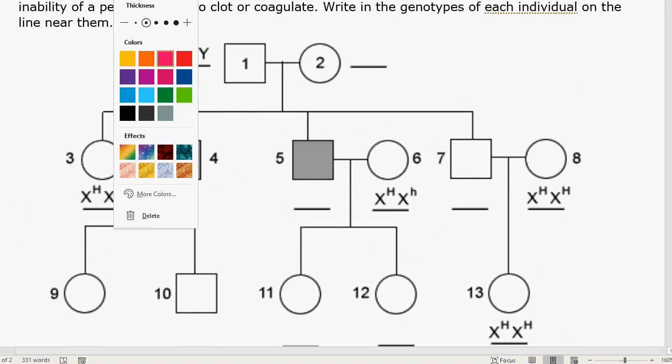So the first male that I notice here is male number four, and so we know that males have an X, Y arrangement. Now give yourself some space to write in the genes on those. So the gene isn't on the Y chromosome, so the gene has to be on the X chromosome.